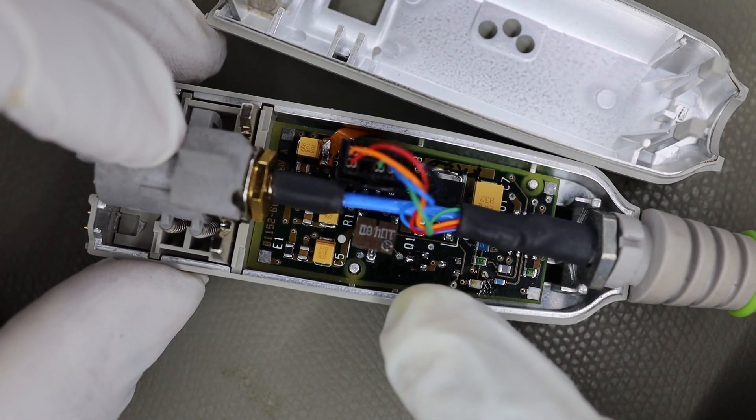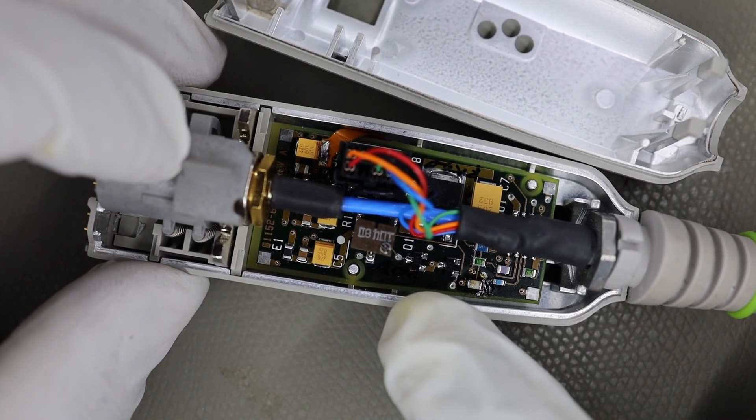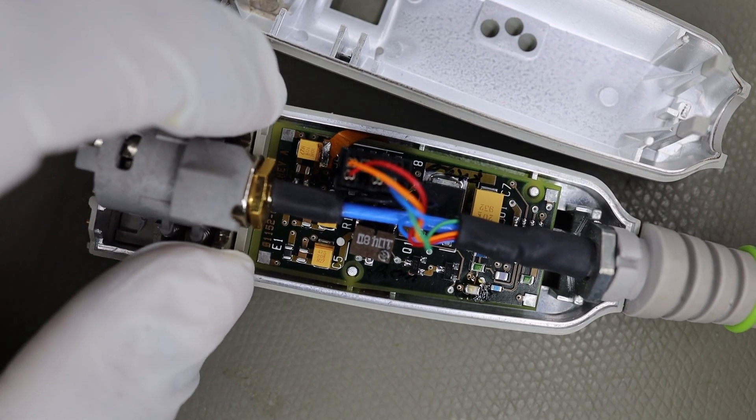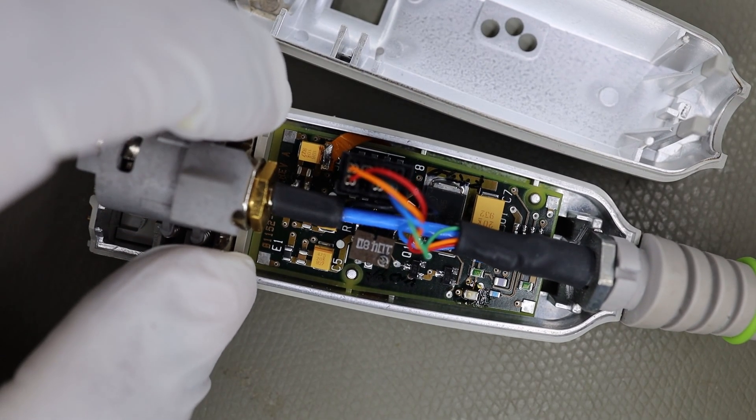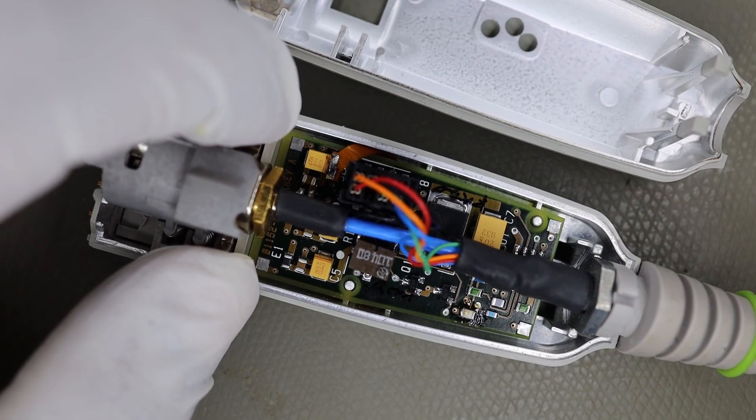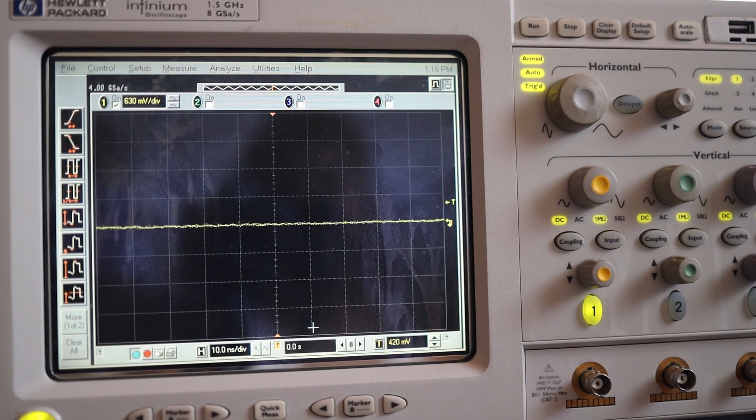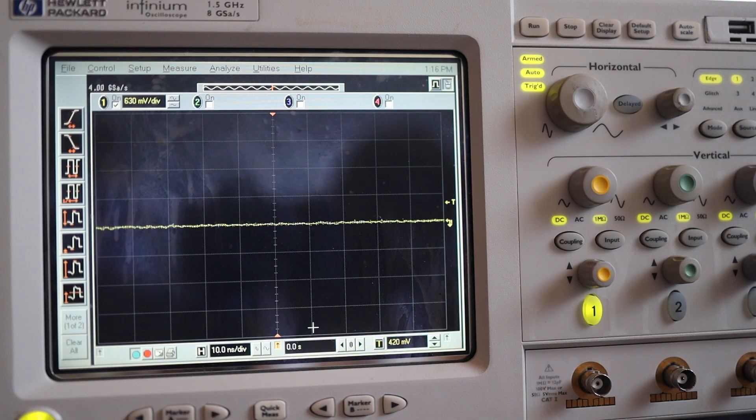And let's get started with the testing. We are going to first test with my old Infinium oscilloscope, see if it gets detected as 1158A probe which we have programmed. So we will be using this particular oscilloscope to test our patch. This is the old HP Infinium oscilloscope - 1.5 GHz and 8 GHz samples per second.